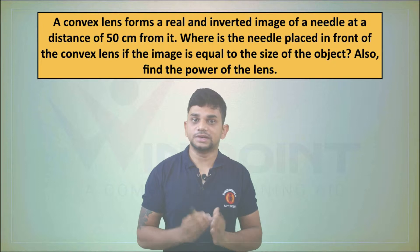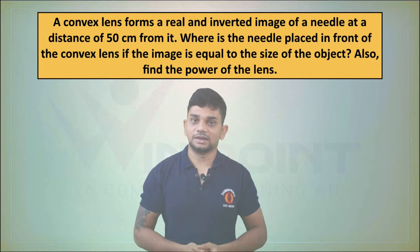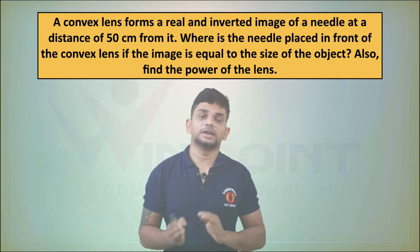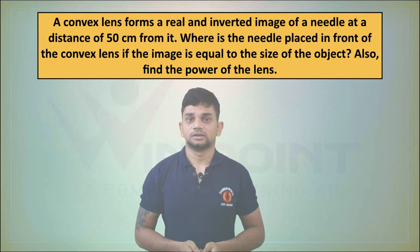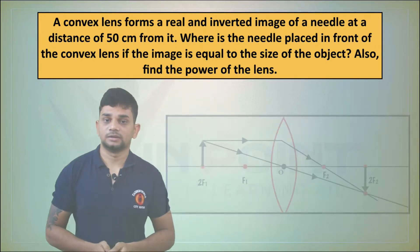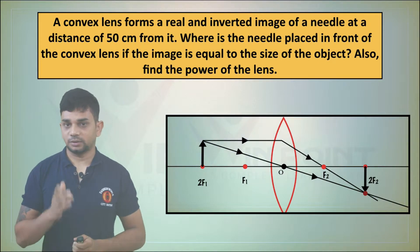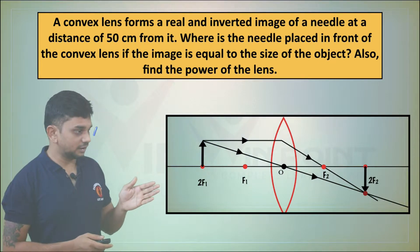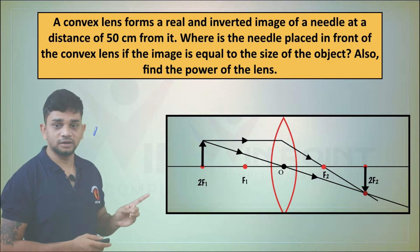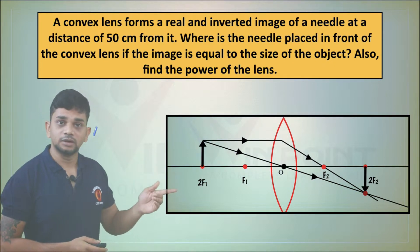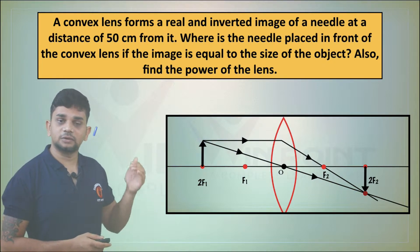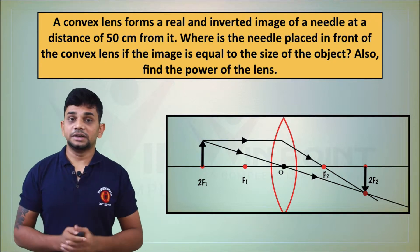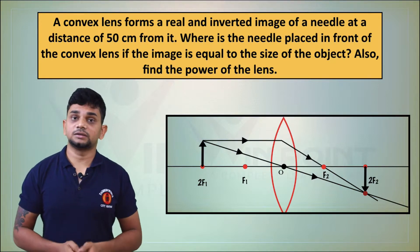When we are getting an image which has equal size to the object, we place the object at 2f1 and we get the image at 2f2. The size of the image and object will be equal. Here in the ray diagram, we are placing the object at 2f1 and getting the image at 2f2, with the size of both being the same. So the needle is at a distance of 50 centimeters.